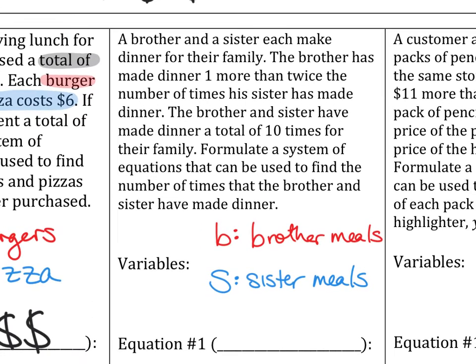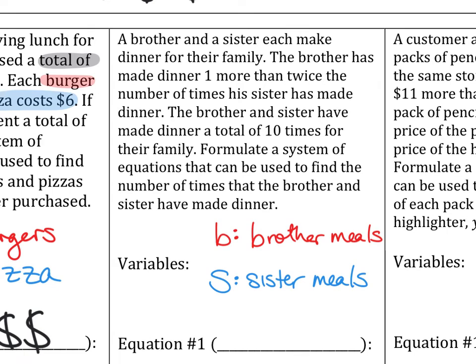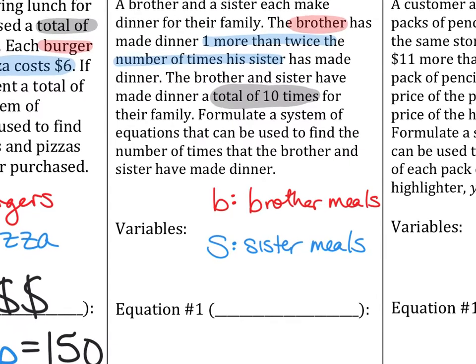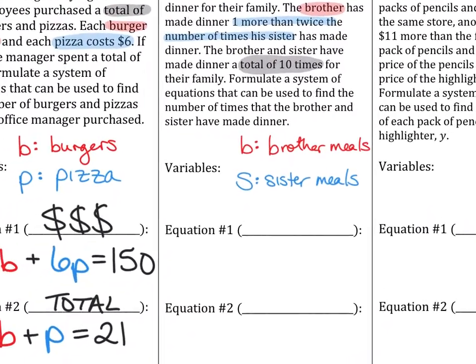I'm going to put brother meals here. So the number of meals that the brother has cooked. And then what other letter? S for sister meals. Let's go back and read the equation and see what numbers we can find in here. First time I see a number, it says the brother has made dinner one more than twice the number of times his sister has made dinner. So the brother has made dinner one more than twice the sister. One more than twice the sister.